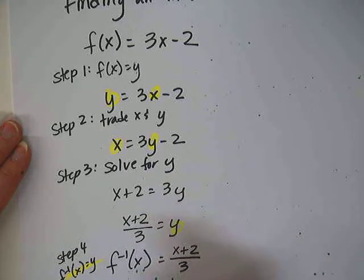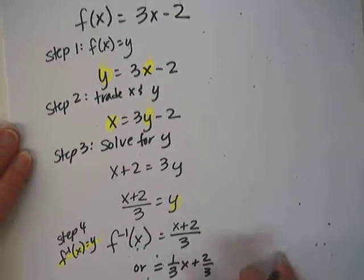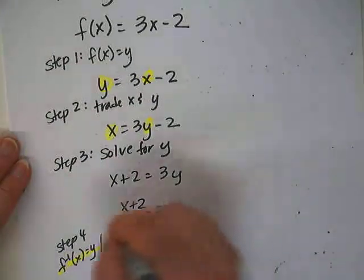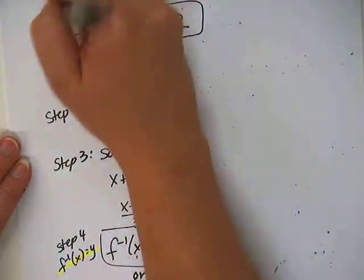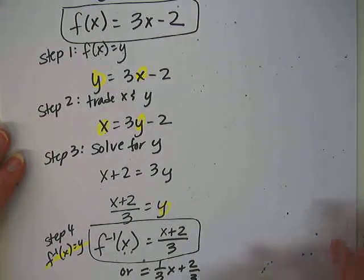Or if you wanted to write it as a linear function, you could think of it as (1/3)x + 2/3, because then you've got your slope and y-intercept in case you wanted to graph that. So this is the inverse of this, and if we graph them on the same graph, they should be symmetric across the axis.